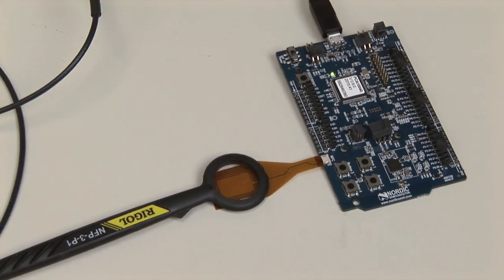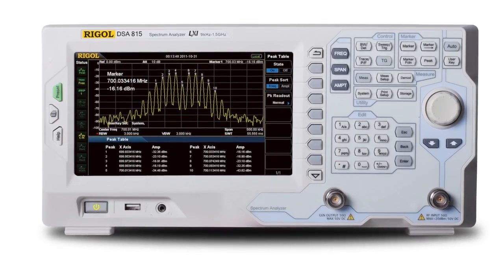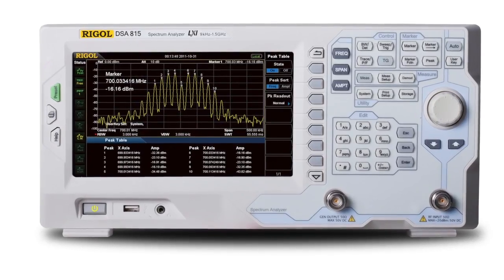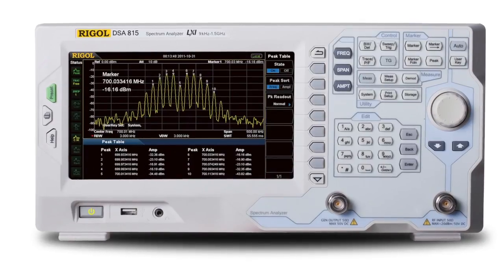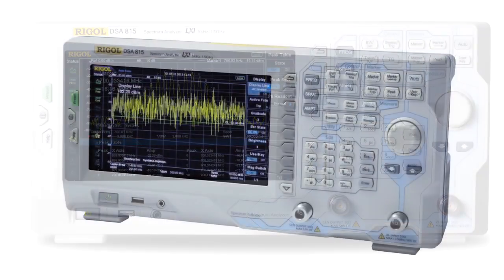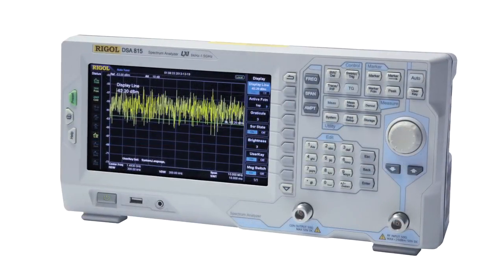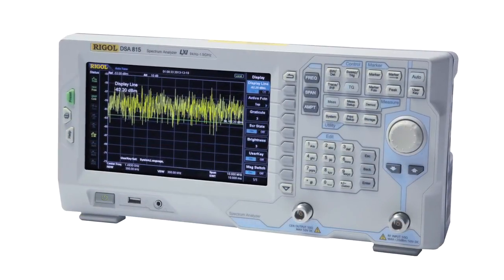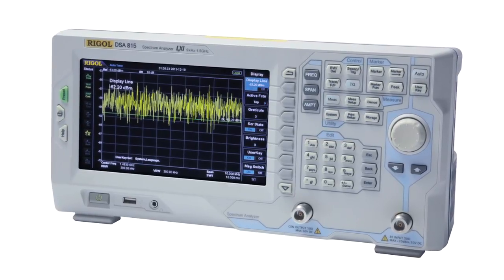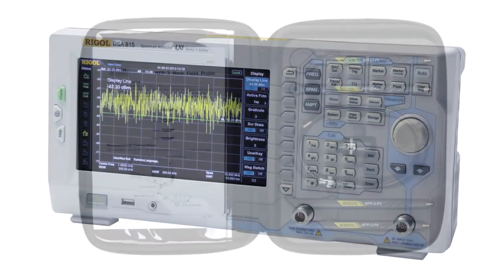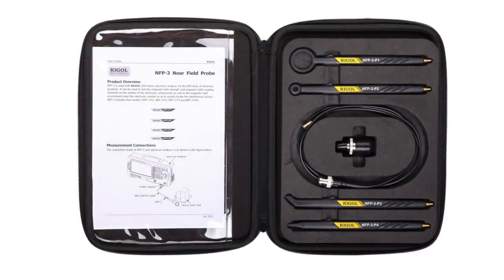The products we'll be using for this demonstration include the DSA815TG spectrum analyzer, which has a range of 9 kHz to 1.5 GHz. It also comes preloaded with the signal capture software, and we'll be using the Near Field Probes to capture the signal from the NFC.